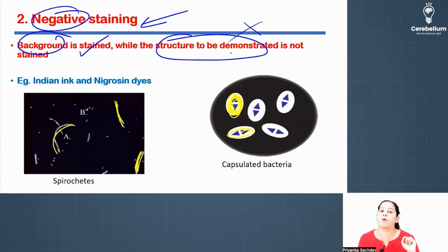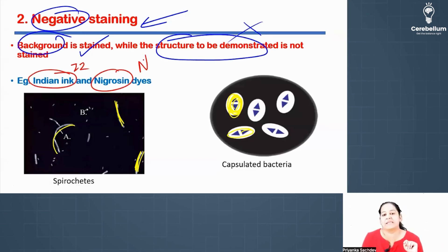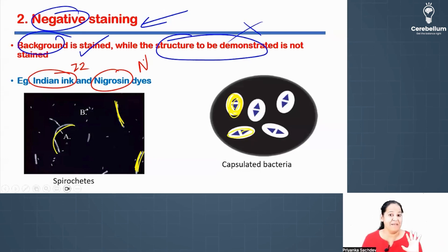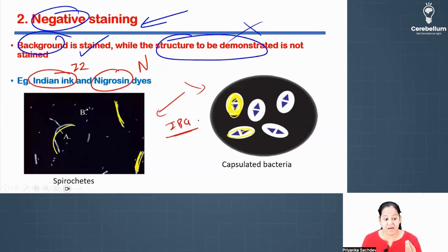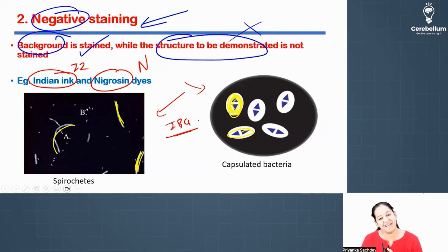Learn two examples — ultra important, with repeated MCQs both direct and indirect. First example is India ink, and second example is Nigrosin. Please learn these two examples. Learn the images as well — whenever a black image comes in your exam with transparent bacteria standing out, just identify it as negative stain. It's a very important image-based question.